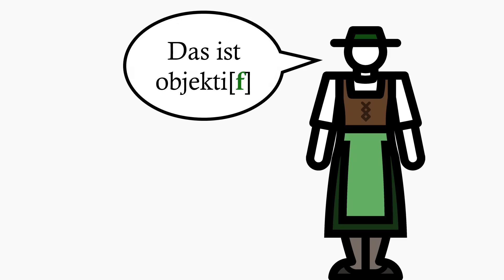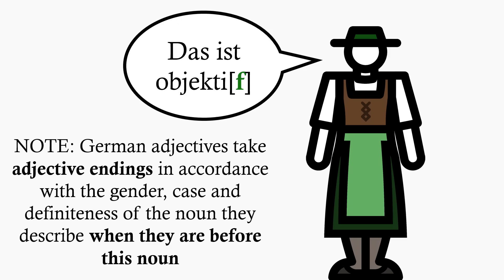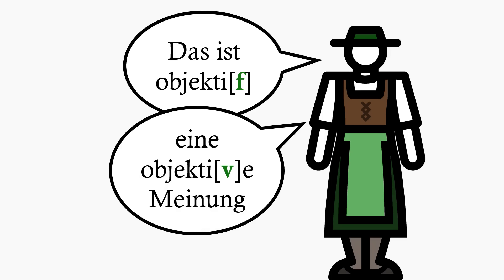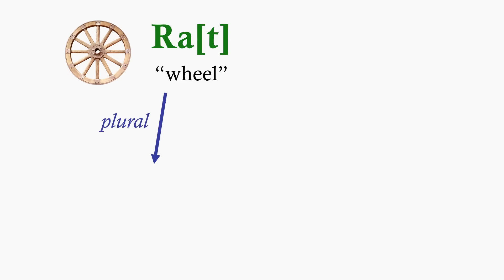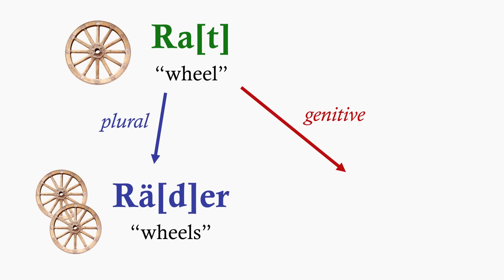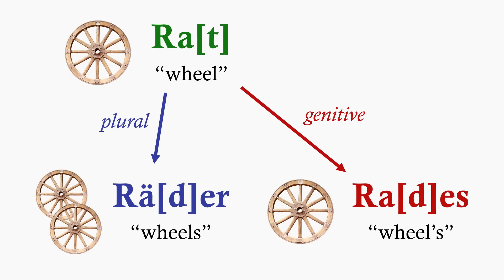Sure, a German would say das ist Objektiv. But as soon as the word takes adjective endings, as in eine objektive Meinung, that F becomes a V. The plural of Rath is Räder. Its genitive is Des Rades, with a D.